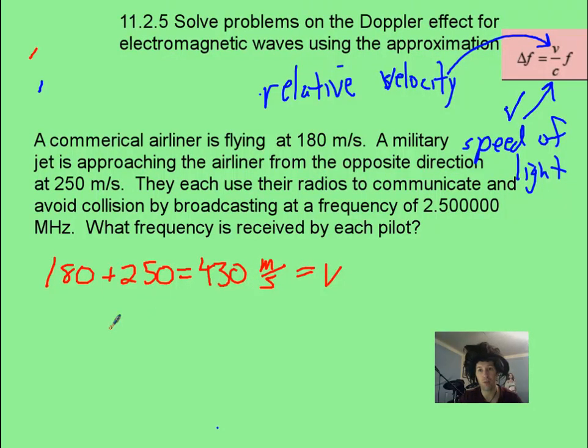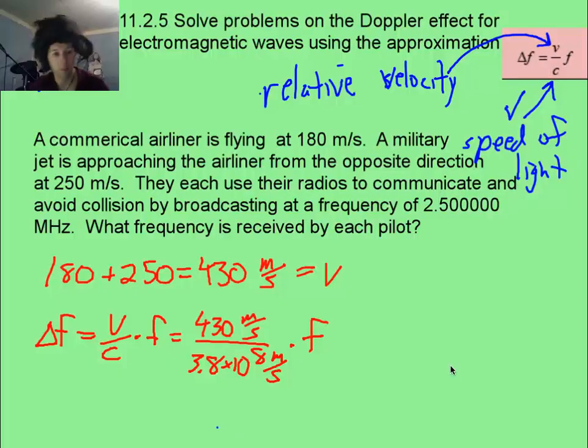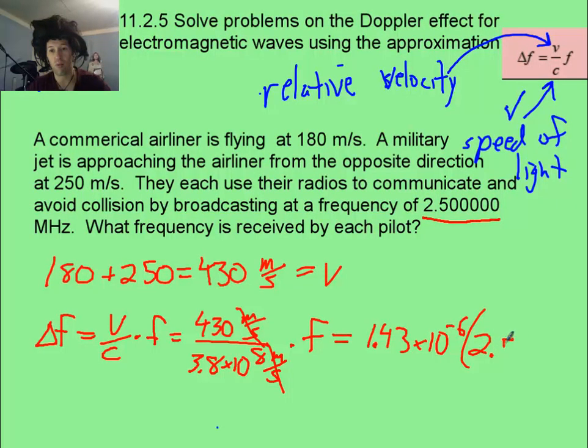Now, see what you can do to find that ratio between that velocity and the speed of light. Now, notice that I did adjust this frequency to give it many significant figures, because otherwise it will be a subtle change that you wouldn't notice. But the relative velocity of the 430 divided by the giant speed of light. And we're going to end up with something like 1.43 times 10 to the negative 6. That's unitless, because these cancelled. Times the 2.5 times 10 to the 6, because it's megahertz.